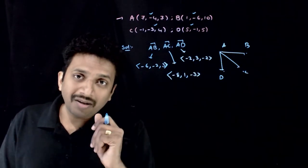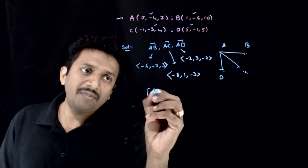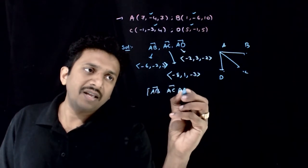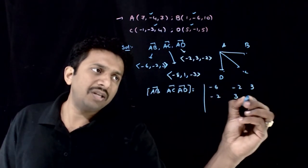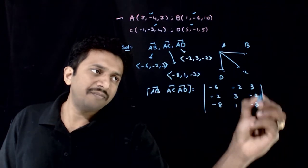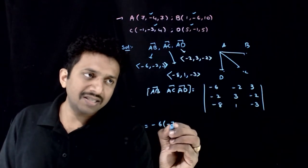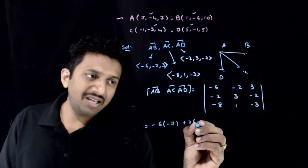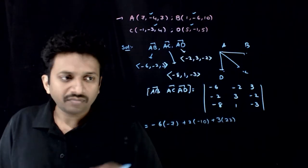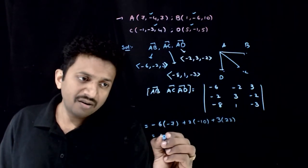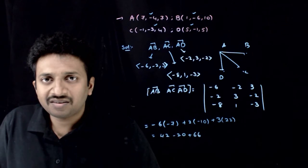Are they coplanar or not? How do we check? The box product has to be equal to 0. The box product of AB, AC, AD is nothing but the determinant: [−6, −2, 3; −8, 1, −3; −2, 3, −2]. That equals minus 6 times (minus 9 plus 2) which is minus 7, plus 2 times (6 minus 6 minus 16) which is minus 10, plus 3 times (minus 2 plus 24) which is 22. That equals 42 minus 20 plus 66.